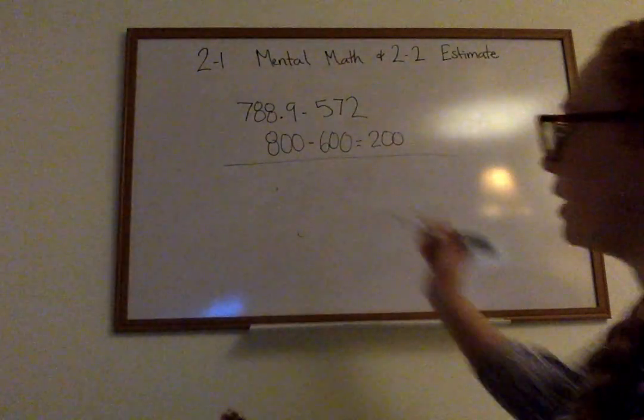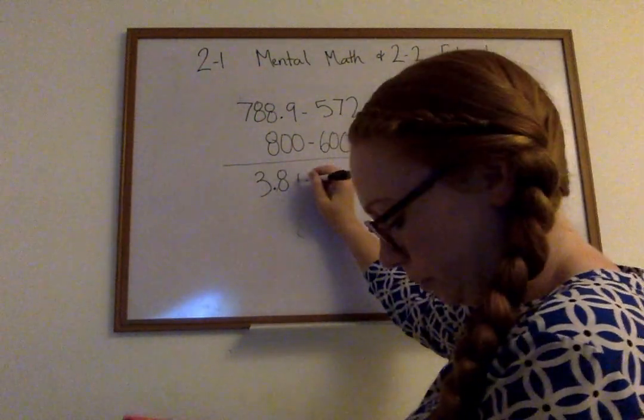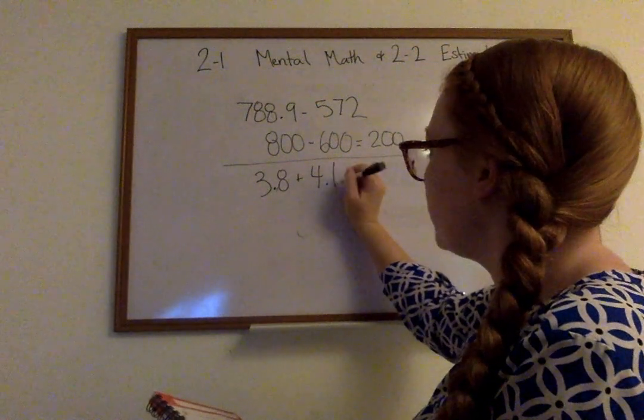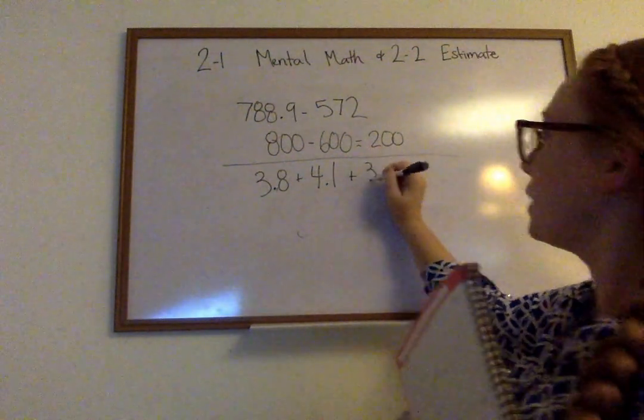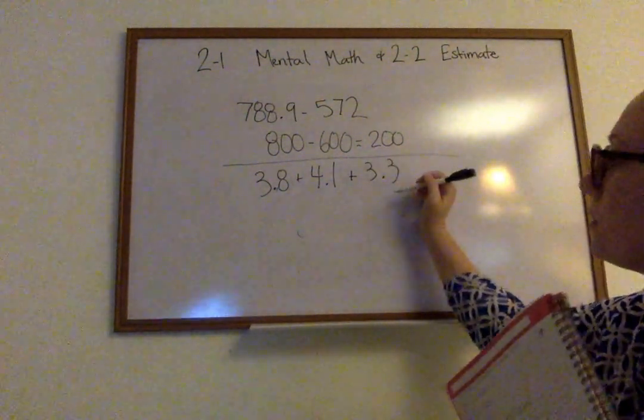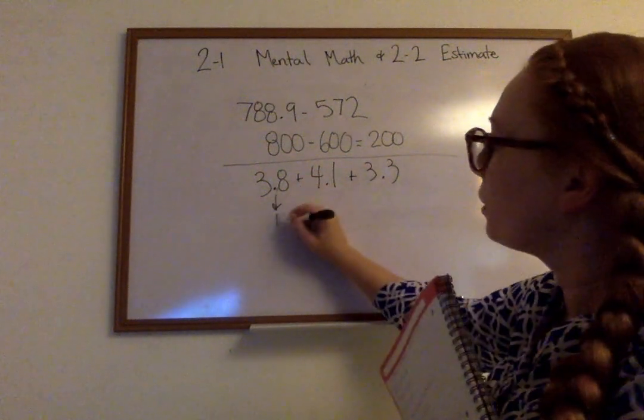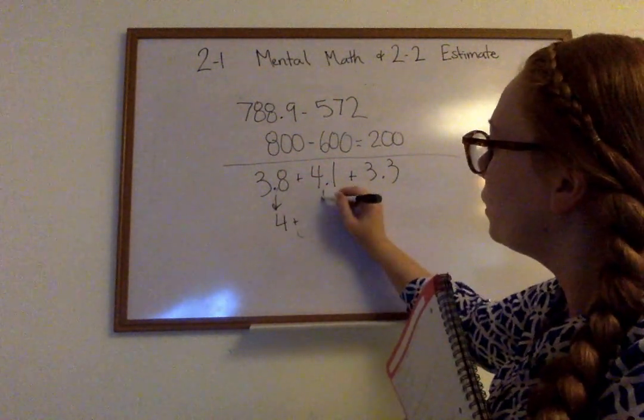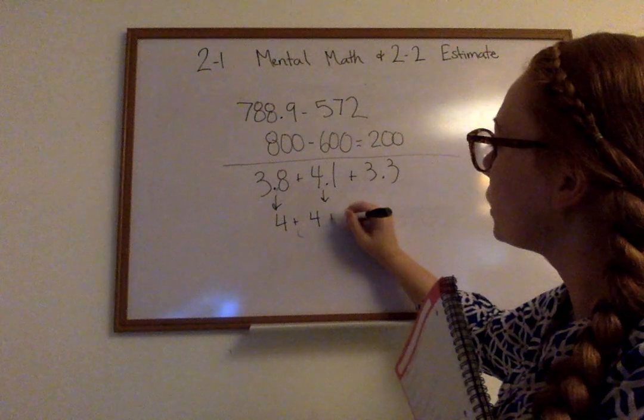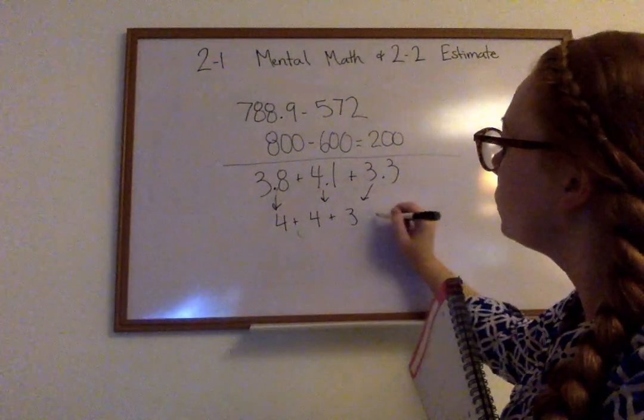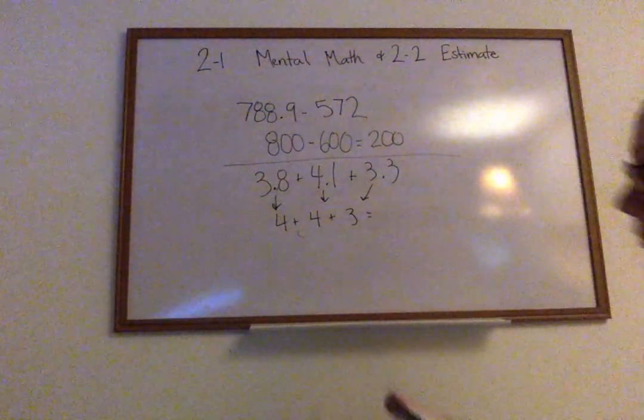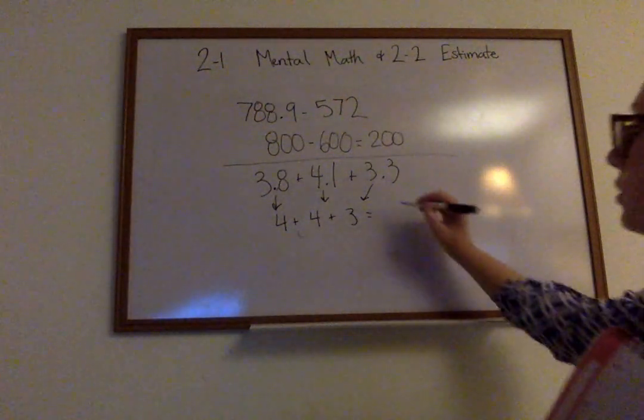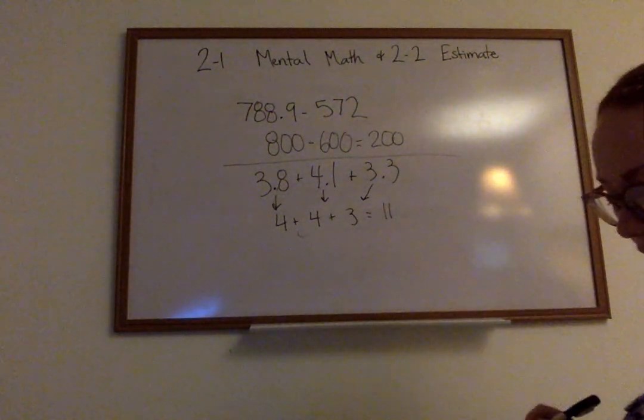Then if I had 3.8 plus 4.1 plus 3.3. This would round up to a 4. This would round down to a 4. And this one would round down to a 3. 4 plus 4 plus 3 is going to give us 11 as the answer. Now I'm going to show you a tricky one.